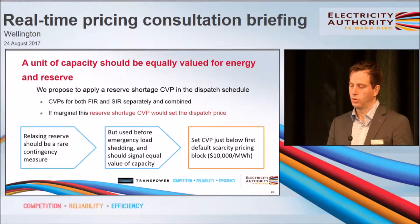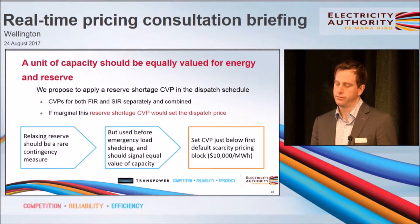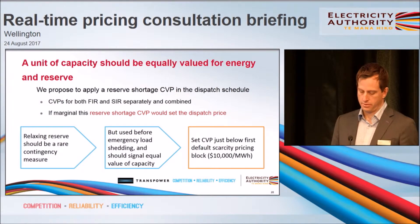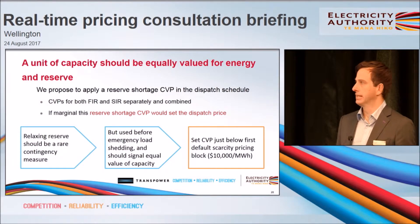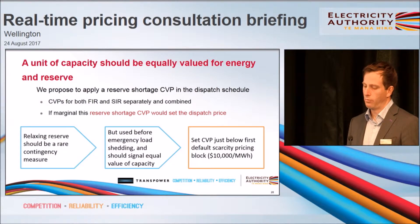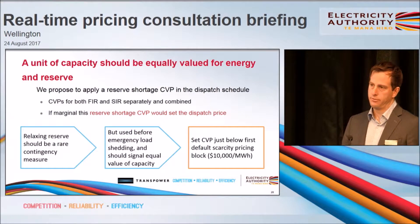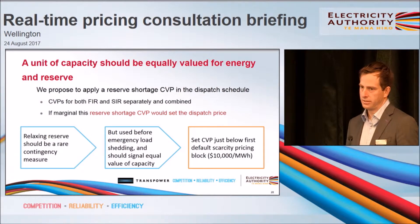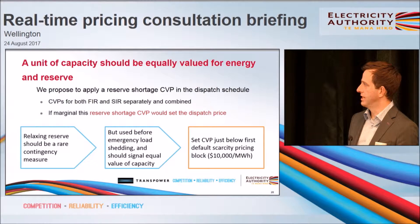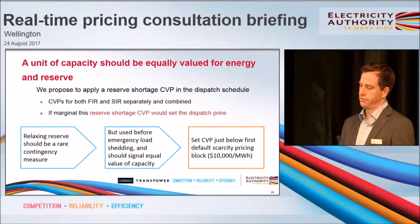We have done some modelling work, but at this point we haven't set forward specific proposed values, and we'd be keen to hear your thoughts on how that should work and what sort of considerations should be taken into account in any algorithm we would use to determine those values. The general logic is that relaxing reserve in this way should be rare — a rare contingency measure — but we should do this before we use instructed emergency load shedding, and when we do so we should signal that the value of that reserve being sacrificed for energy has equal value to a unit of capacity used for energy in the first place. Logically, the way to do that would be to set this reserve shortage CVP at some value just below the first default scarcity pricing block.